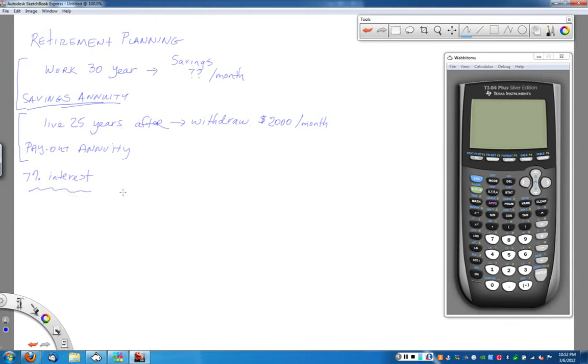For the savings annuity, we want to use the formula where the balance of my account is how much money I'm saving times (1 + R/K)^(NK) - 1 divided by R/K. This is for the savings annuity part. I do not know how much money I'm going to have in that retirement account. That's the balance at the end of my working for 30 years.